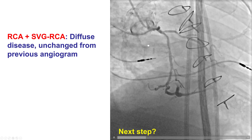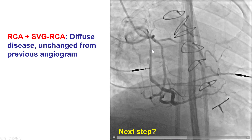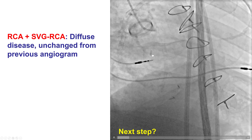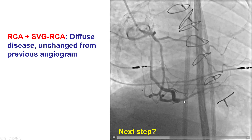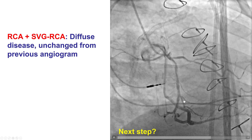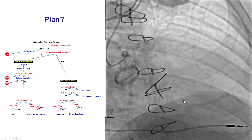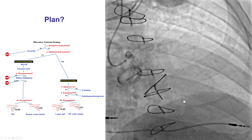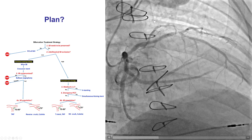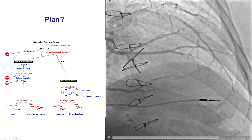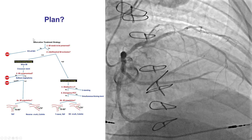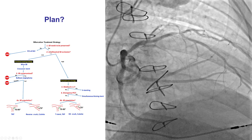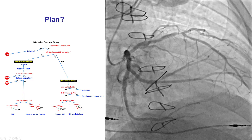The right coronary artery had some diffuse disease but was patent, as was an SVG to the PDA, both unchanged compared with the previous angiogram. The plan was to perform PCI of the LAD, and the key questions for every bifurcation lesion PCI are: first, whether the side branch needs to be preserved, and second, what is the likelihood of side branch occlusion?